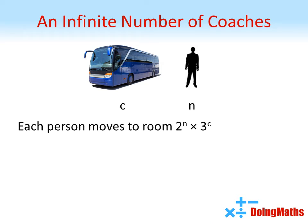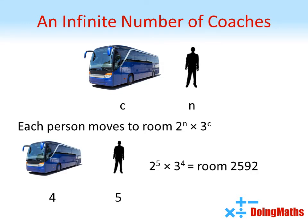So for example, the person in seat 5 on coach 4 will go to room 2 to the power of 5 times 3 to the power of 4, which is 2,592. By the fundamental theorem of arithmetic, each positive integer has a unique set of prime factors, hence no two people will end up in the same room and all guests will have a room. There will be some empty rooms — for example, 15 can't be made as a product of 2s and 3s — but we are only concerned with getting all guests into the hotel, so this is okay.